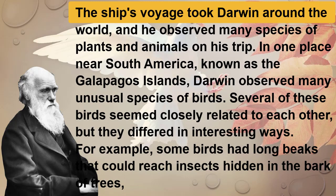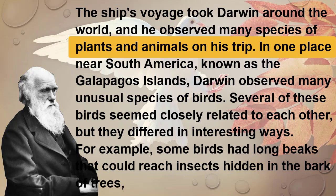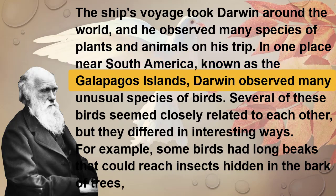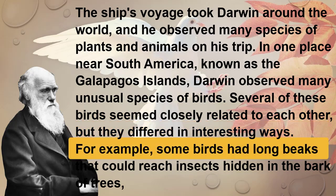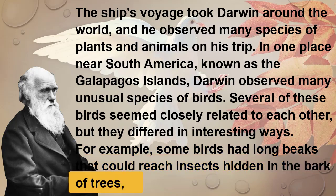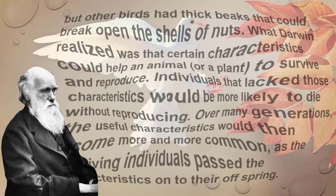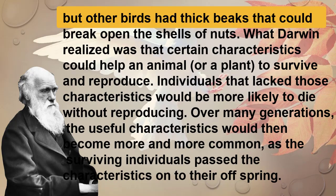The ship's voyage took Darwin around the world and he observed many species of plants and animals. In one place near South America, known as the Galapagos Islands, Darwin observed many unusual species of birds. Several of these birds seemed closely related to each other but differed in interesting ways. For example, some birds had long beaks that could reach insects hidden in the bark of trees, but other birds had thick beaks that could break open the shells of nuts.